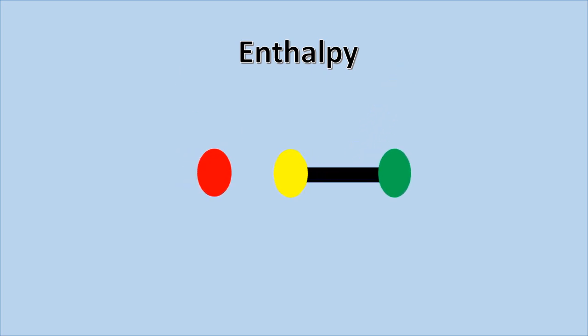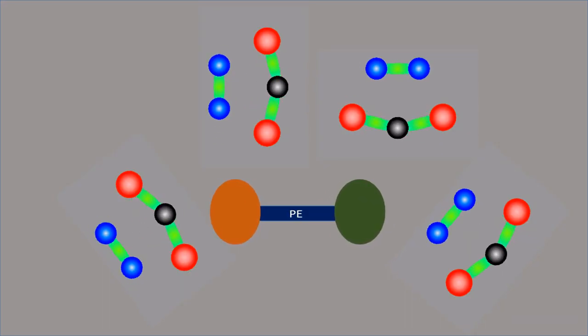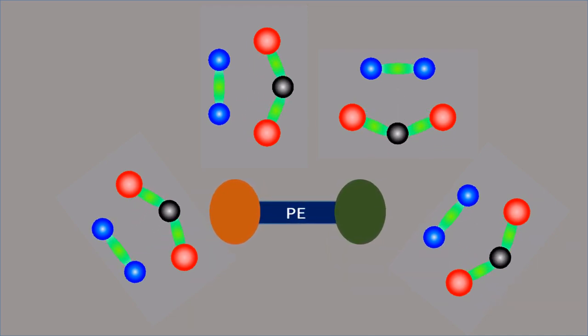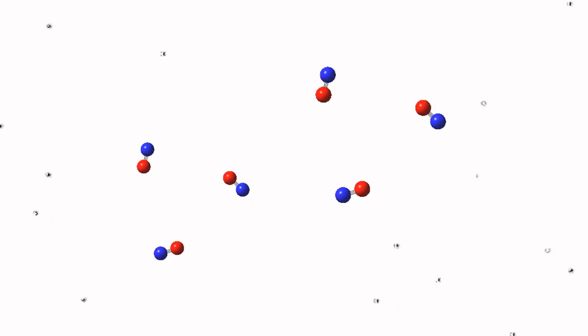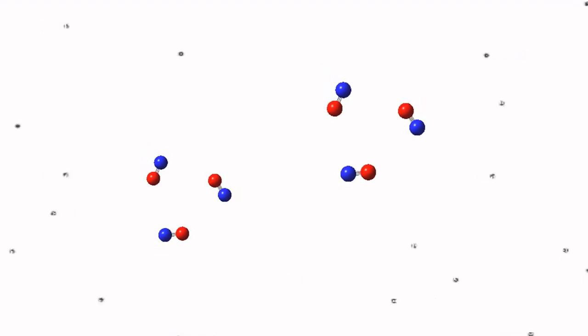Chemical bonds possess potential energy. During chemical reactions, old bonds break and new bonds form, along with the release or absorption of energy, which leads to a change in the potential energy of the molecular system.